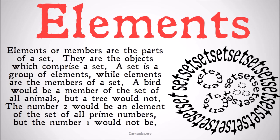Elements or members are the parts of a set — they are the objects that comprise a set. A set is a group of elements, while elements are members of a set. A bird, for example, would be a member or an element of the set of all animals, but a tree would not. The number two would be an element of the set of all prime numbers, but the number one would not be.